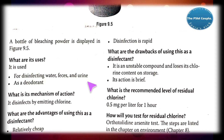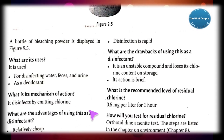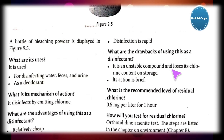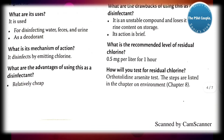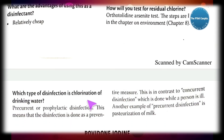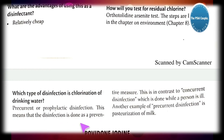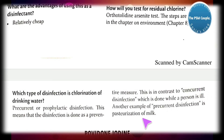Next is bleaching powder. Its uses include disinfection of water, feces, and urine, and as a deodorant. Its mechanism of action is by emitting chlorine. Advantages: relatively cheap, disinfection is rapid. Drawbacks: it is an unstable compound and loses its chlorine content on storage; action is brief. Recommended level of residual chlorine is 0.5 mg per liter for one hour. Chlorination of drinking water is an example of precautionary or prophylactic disinfection — disinfection done as a preventive measure, in contrast to concurrent disinfection done while a person is ill.